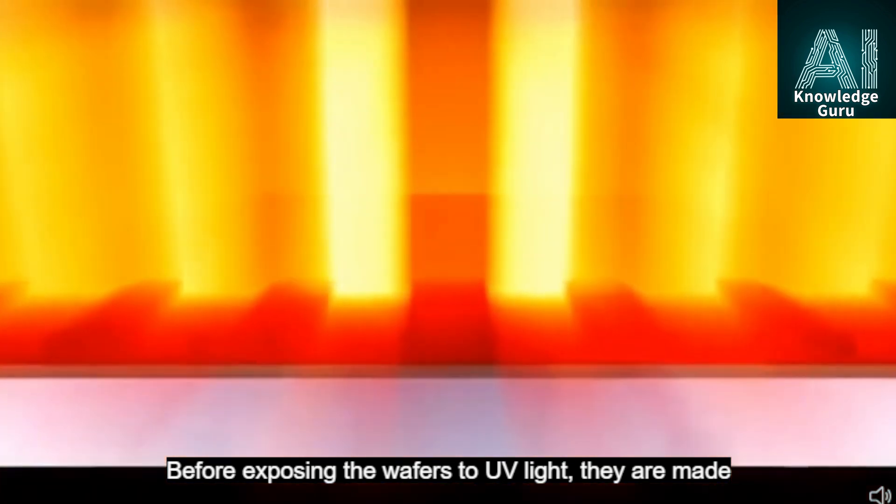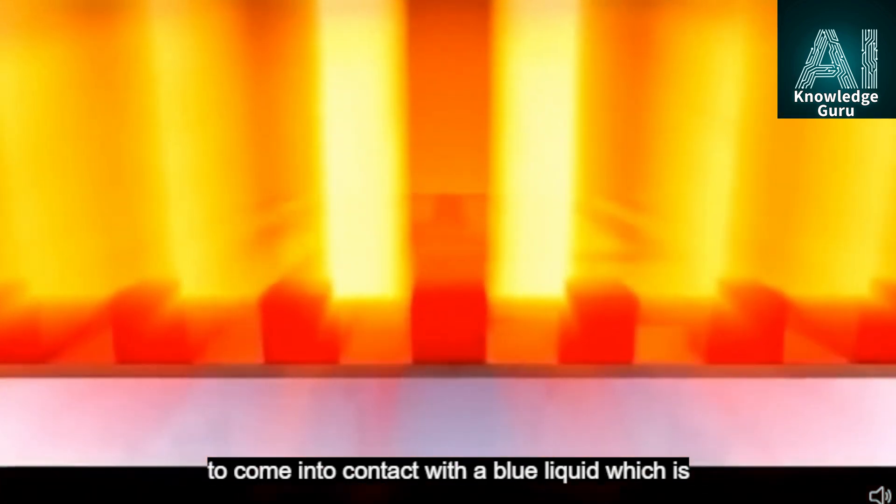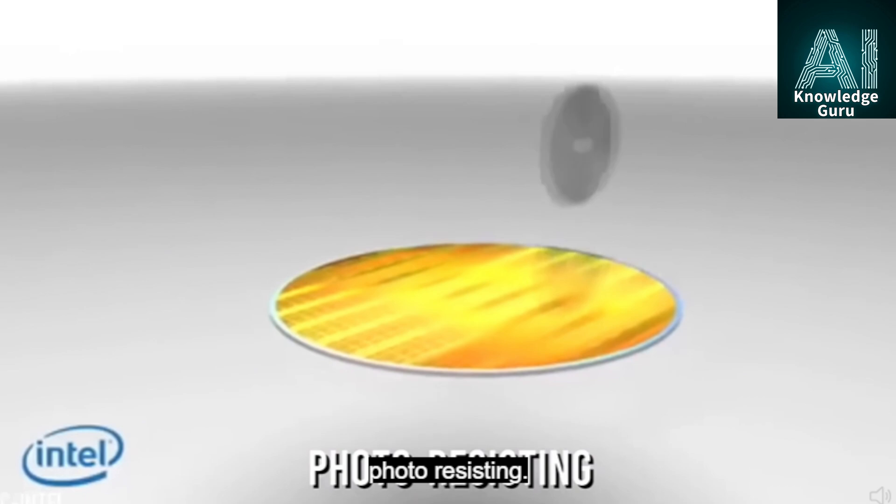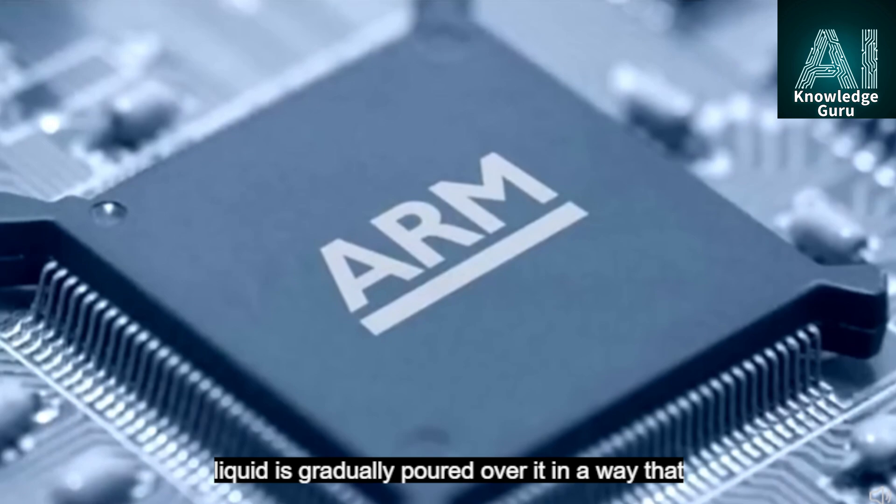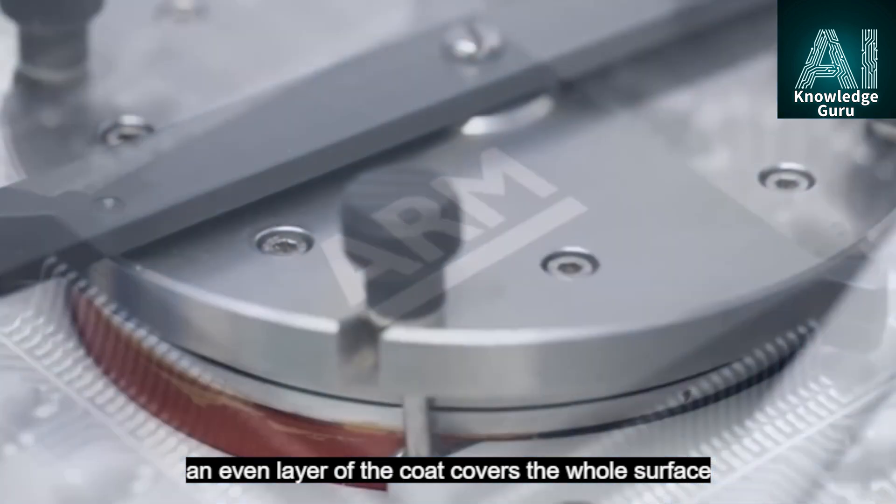Before exposing the wafers to UV light, they are made to come into contact with a blue liquid which is photo-resisting. As the wafer is spun at high speed, the blue liquid is gradually poured over it in a way that an even layer of the coat covers the whole surface of the wafer.